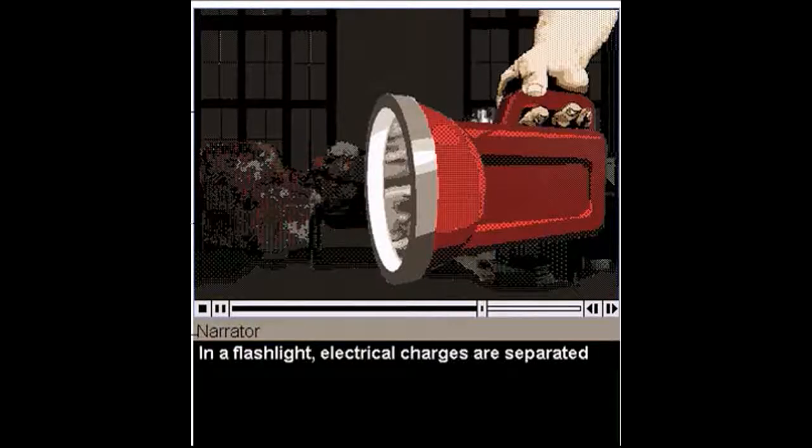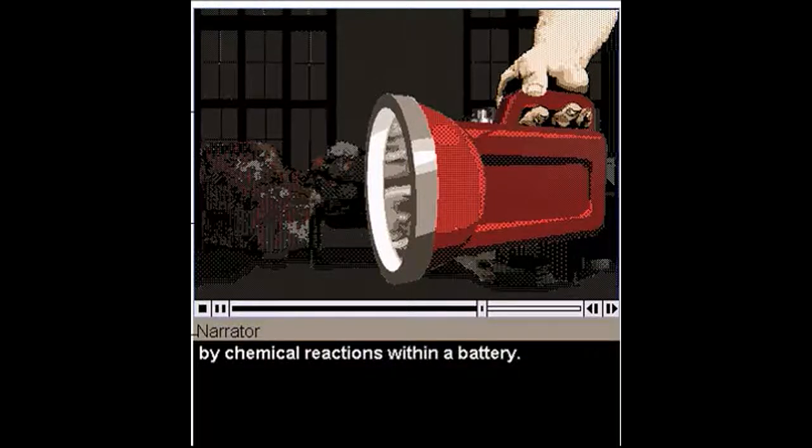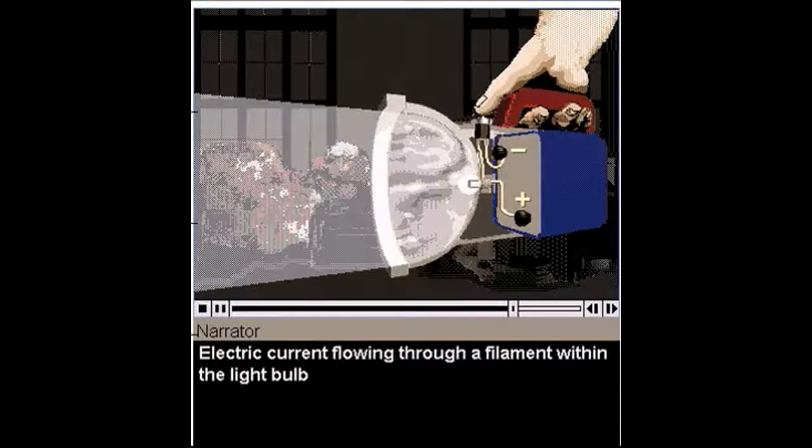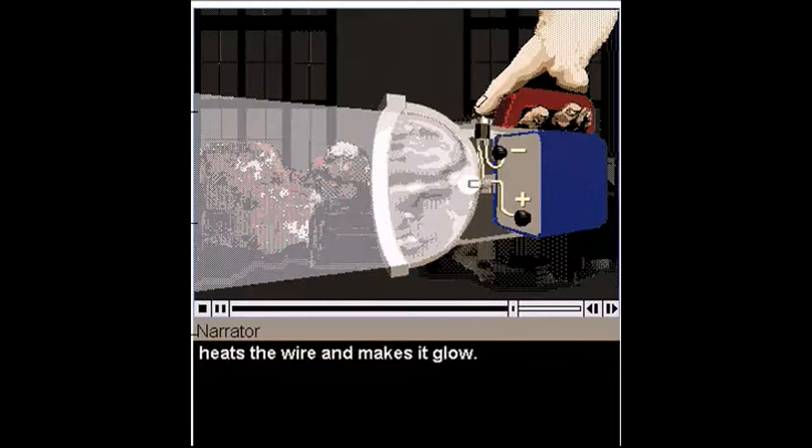In a flashlight, electrical charges are separated by chemical reactions within a battery. Negative charges, or electrons, flow through the wires. Electric current flowing through a filament within the light bulb heats the wire and makes it glow.